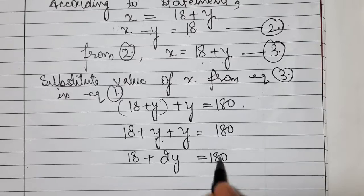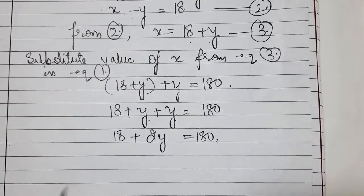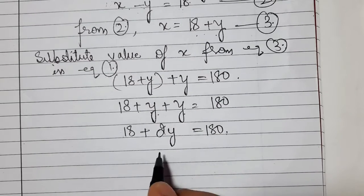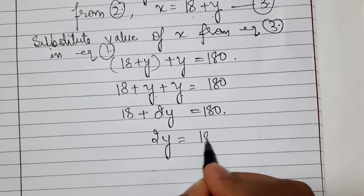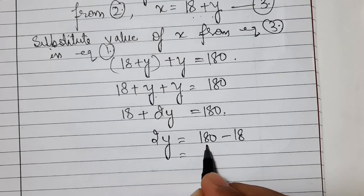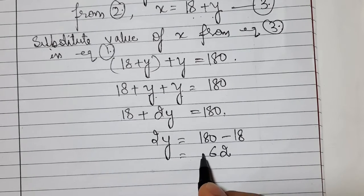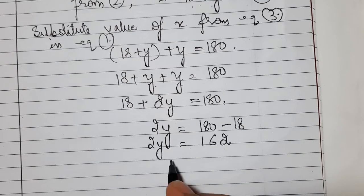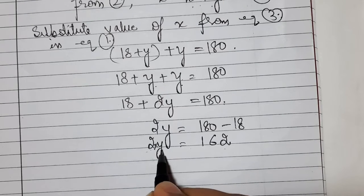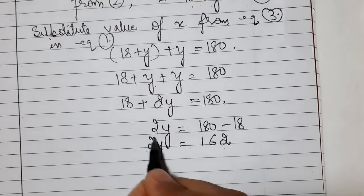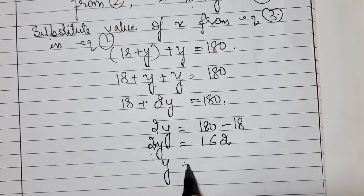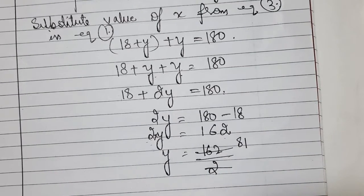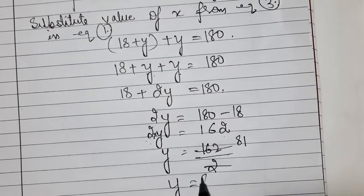y and y are like terms, so y plus y is 2y, and 18 stays as it is: 2y plus 18 equals 180. Now 18 goes to the other side and gets subtracted, so 2y equals 180 minus 18, which gives 2y equals 162. Dividing both sides by 2, we get y equals 81.